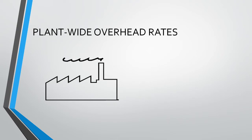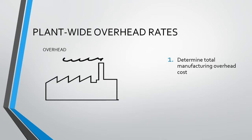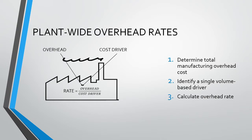Let us revise the workings of the plant-wide overhead rates. Remember from our previous video that we first need to determine our total manufacturing overhead cost for the entire factory or operation. We then need to identify a single volume-based cost driver which best explains the usage of the overhead. We can then calculate the overhead rate by dividing the overhead cost by the cost driver, and use this rate to allocate the overhead cost to the cost object.